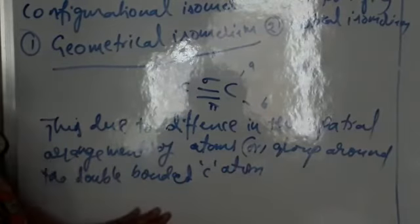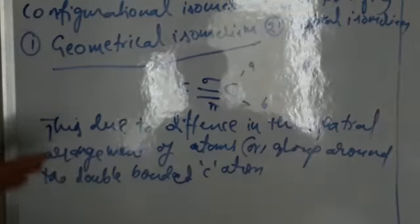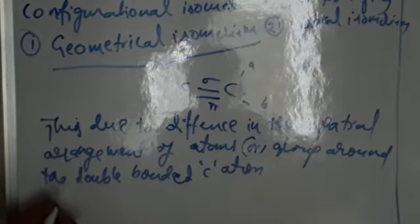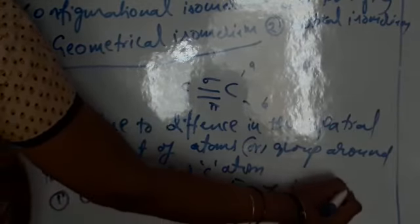Geometrical isomerism is again of two types: cis-trans isomerism and E-Z isomerism.